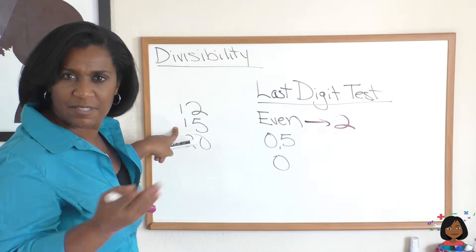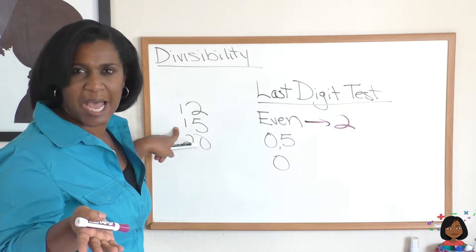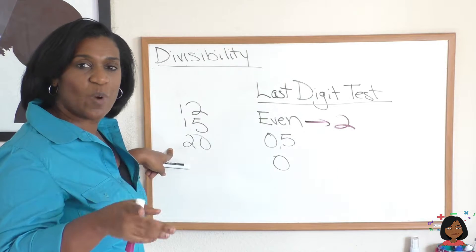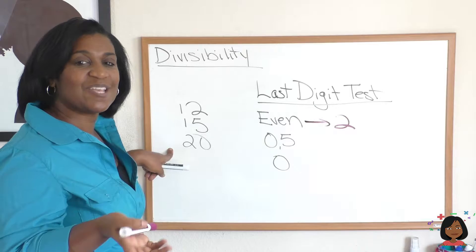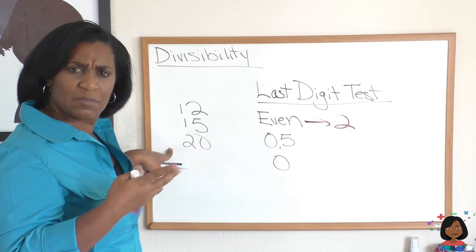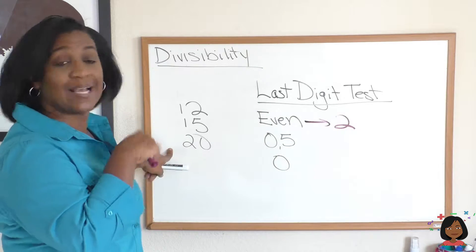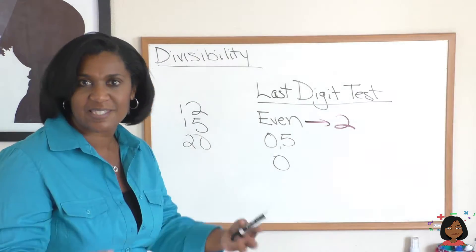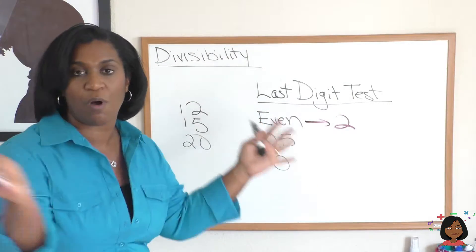What about 15? Is that even? No, it's not. So, it's not divisible by 2. What about 20? Is 20 even? Yes, it is. Which means it's divisible by 2. How many times? 2 goes into 20 10 times. So, that's just an easy test to help make your life easier. Which we're all about.